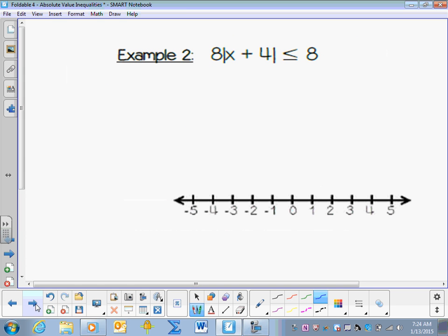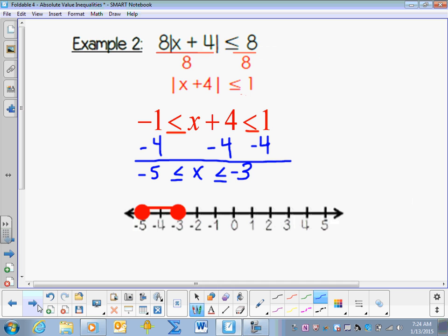Example 2. 8 times the absolute value of x plus 4 is less than or equal to 8. Divide each side by 8. Remove the absolute value signs. Rewrite the inequality and then solve it. Your solution is negative 5 is less than x, which is less than or equal to negative 3.